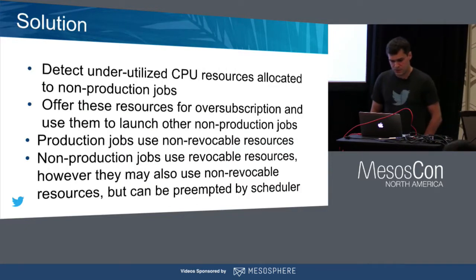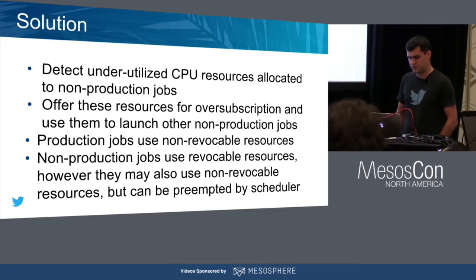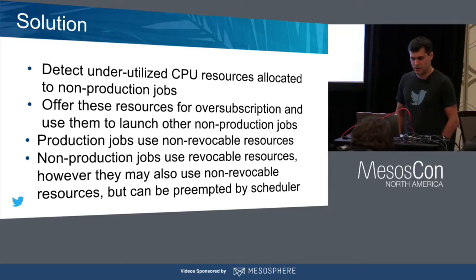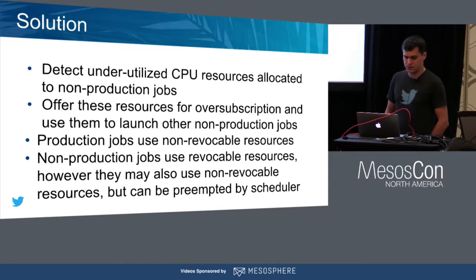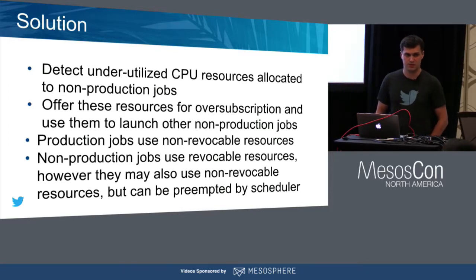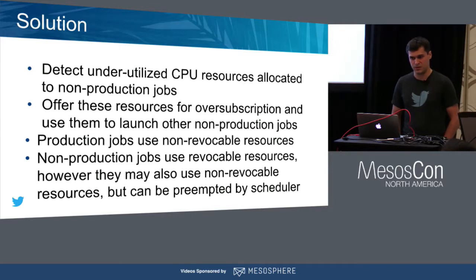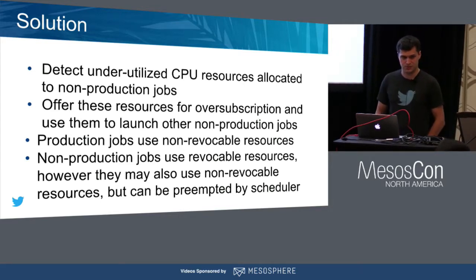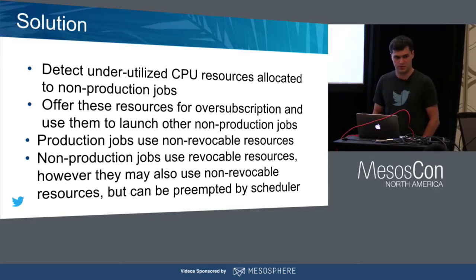What we try to do is detect underutilized CPU resources based on the metrics we collect, then offer these resources for oversubscription to non-production jobs. We also separate how we run production and non-production jobs: production jobs will use non-revocable resources, while non-production jobs are going to use revocable resources. We need some intermediate stage when moving from the current state where non-production jobs use non-revocable resources, so potentially non-production jobs could use both revocable and non-revocable resources.